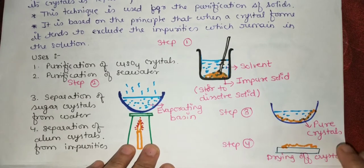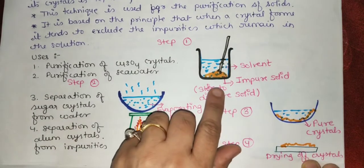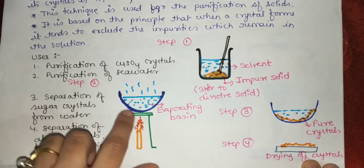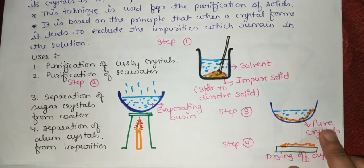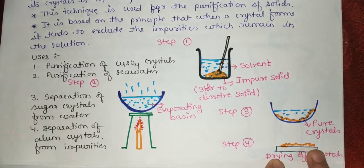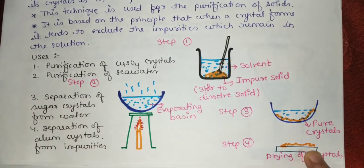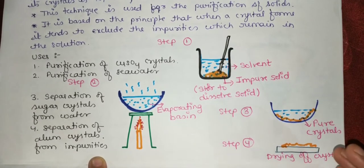For example, to purify copper sulfate crystals, we dissolve impure copper sulfate in water and heat it. The copper sulfate crystals are left behind while impurities are carried away with the liquid. After drying, we get pure copper sulfate crystals. This process is also used for purifying salt from seawater, sugar crystals, or alum crystals dissolved in water.